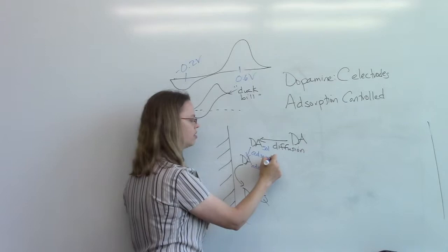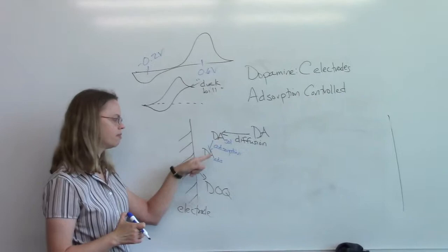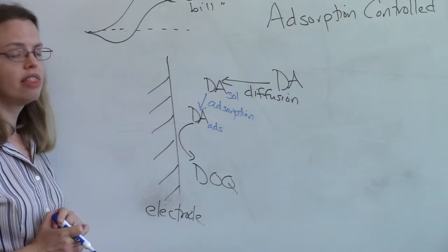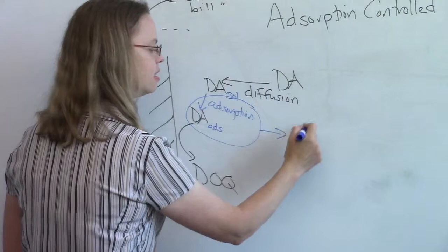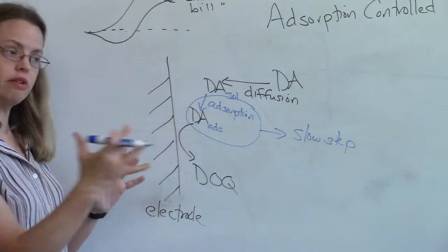So I called it dopamine adsorb there. So we're going to adsorb it from the solution onto the electrode surface. It turns out that each of these has a rate constant. And for the FSCV, it turns out that this is the slow step.